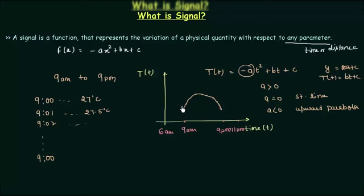This function is your signal. You will have the values of temperature for different times, and the signal gives you a pattern that tells you how the temperature has been changing from 9 a.m. to 9 p.m.